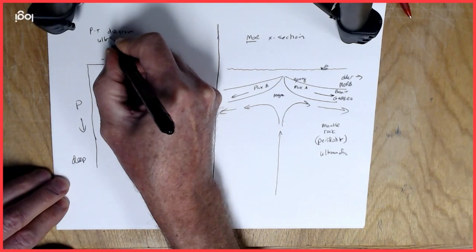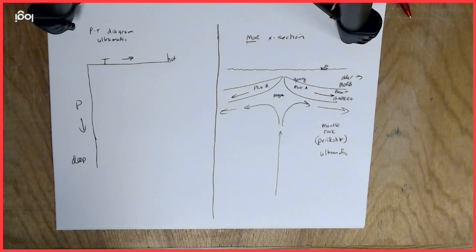So by convention we're going to have temperature increasing to the right and pressure increasing downwards, so this will be deep in the earth. And temperature will be increasing toward the right so it's hot over here. And if this is a PT diagram for ultramafic material like peridotite, we could actually do the experiments in a specially equipped lab to figure out what pressure and temperature conditions that material will be solid versus liquid or a partial melt.